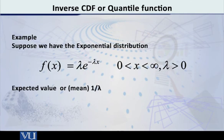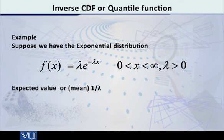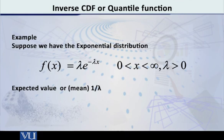Let me explain this with the help of an example. Suppose that we have the exponential distribution, which is a very well-known continuous distribution, given by f(x) = λe^(−λx), where x lies between 0 and infinity, and λ > 0. It is well known that the mean of this exponential distribution is equal to 1 over λ. That is the PDF — the probability density function of this distribution.